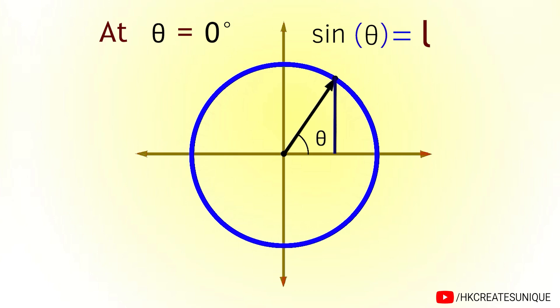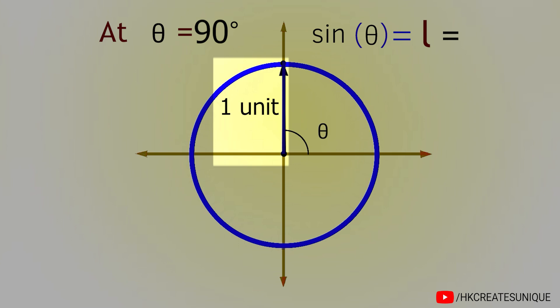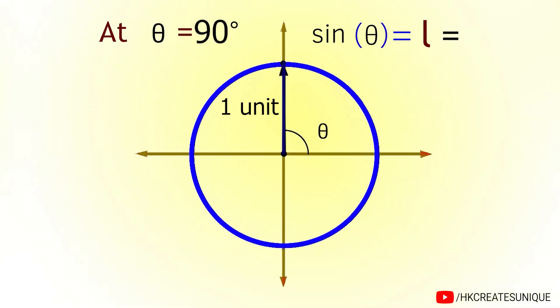And since hypotenuse is equal to radius of the circle, that is 1 unit, so sine theta equals length of the vertical line L. So at theta equals 0 degrees, length is 0 unit. If theta is increased to 30 degrees, length becomes half unit. And at theta equals 90 degrees, length is 1 unit. Because it equals radius of the circle, which is 1 unit.